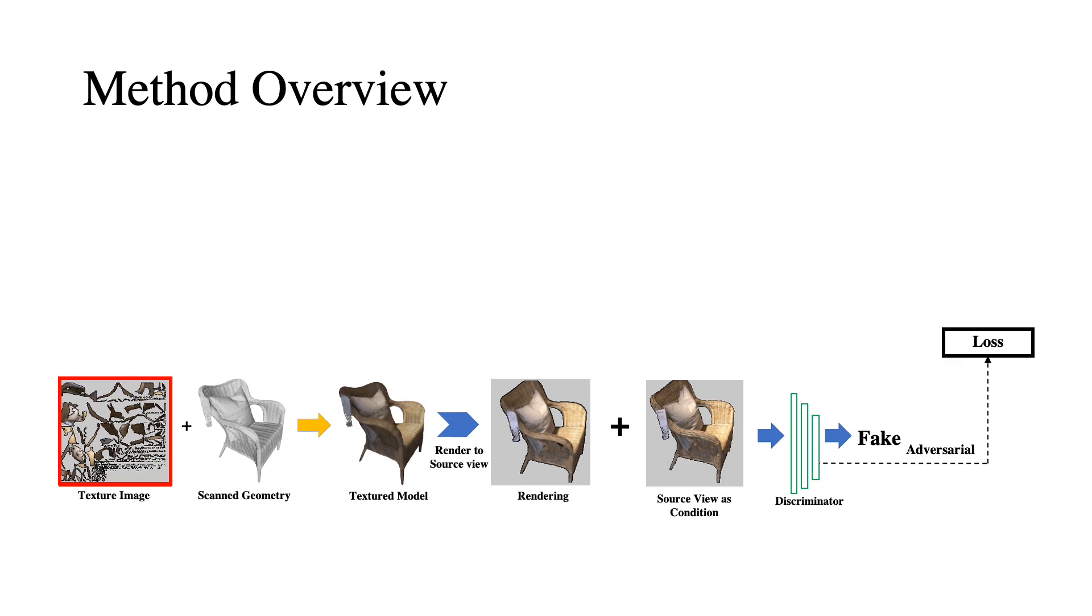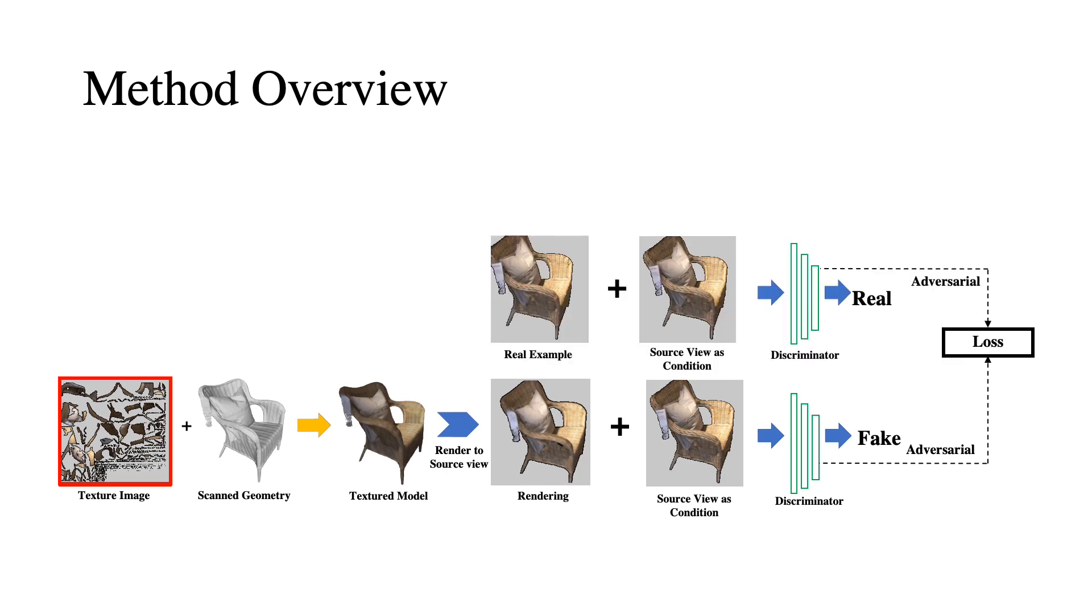In order to obtain a discriminator that effectively classifies fake from real, we additionally need real examples for training the discriminator. Since we want to obtain a misalignment-tolerant metric, we enrich our real examples with misaligned versions from the source images.